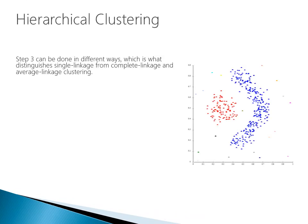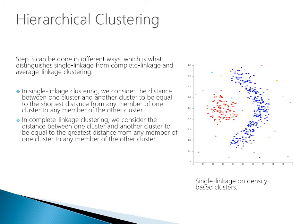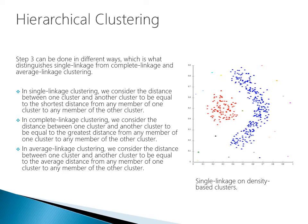Step three of hierarchical clustering can be done in different ways, which distinguishes single linkage from complete linkage and average linkage clustering — there are different variants depending on how you calibrate the parameters. In single linkage clustering, the distance between clusters equals the shortest distance from any member of one cluster to any member of the other. In complete linkage clustering, the distance equals the greatest distance from any member of one cluster to any member of the other. In average linkage clustering, the distance equals the average distance from any member of one cluster to any member of the other.